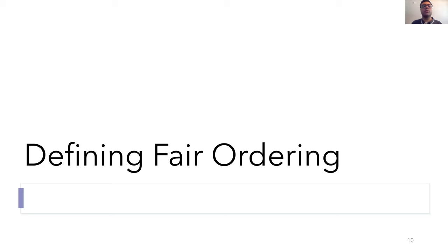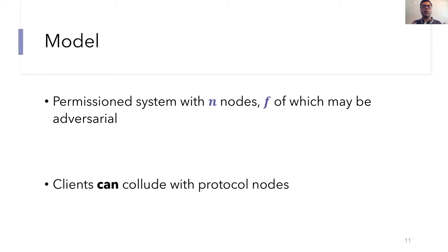So next, I'd like to go into a little more detail about our model and our definitions of order fairness. We model a permission network with n nodes in total, and out of these, at most f can be adversarial. We also allow clients to collude with protocol nodes.